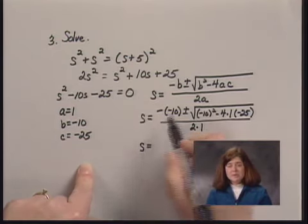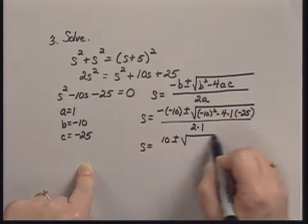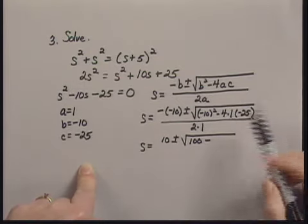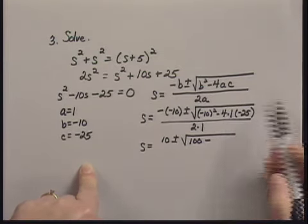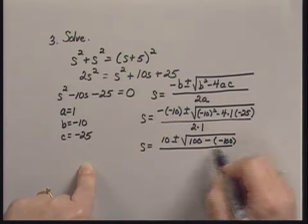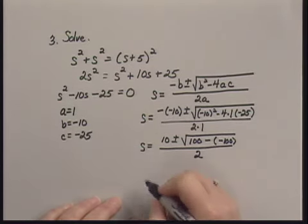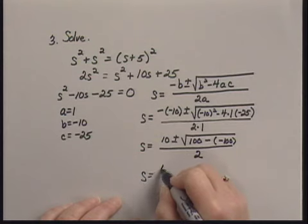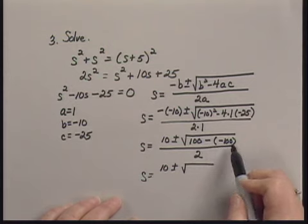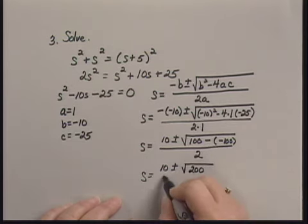So S equals the opposite of negative 10, which is 10, plus or minus the square root of negative 10 squared, which is 100, minus 4 times 1 times negative 25, which is negative 100. That's all over 2. Simplifying inside the radical: 100 minus negative 100 is 100 plus 100, which is 200. All over 2.